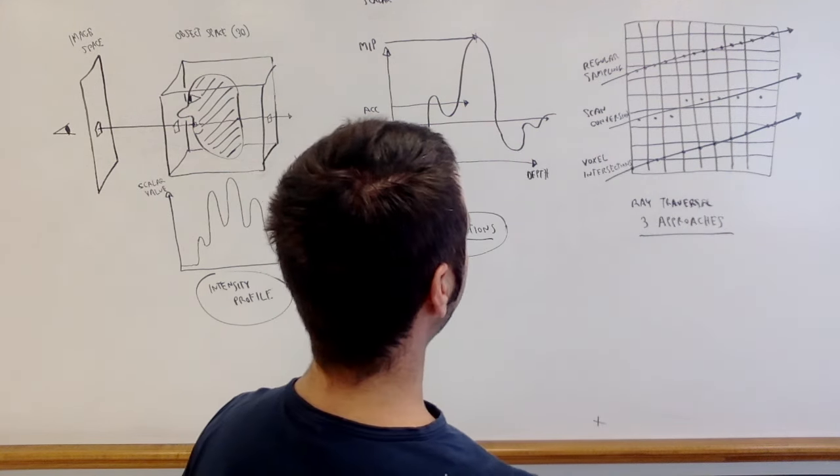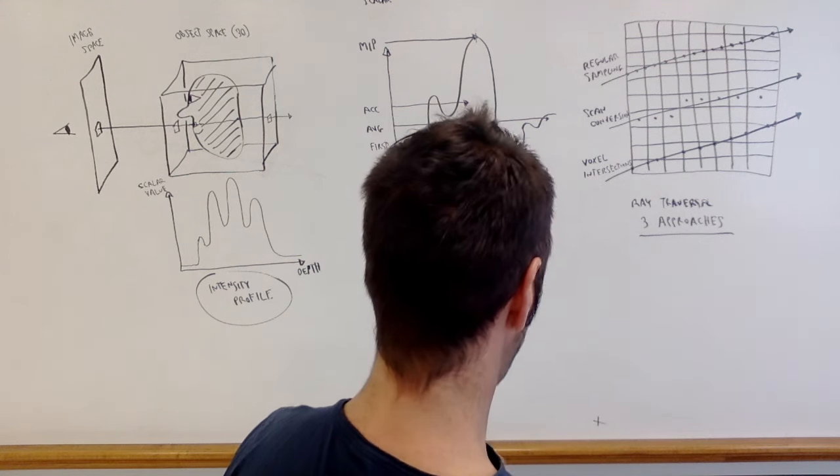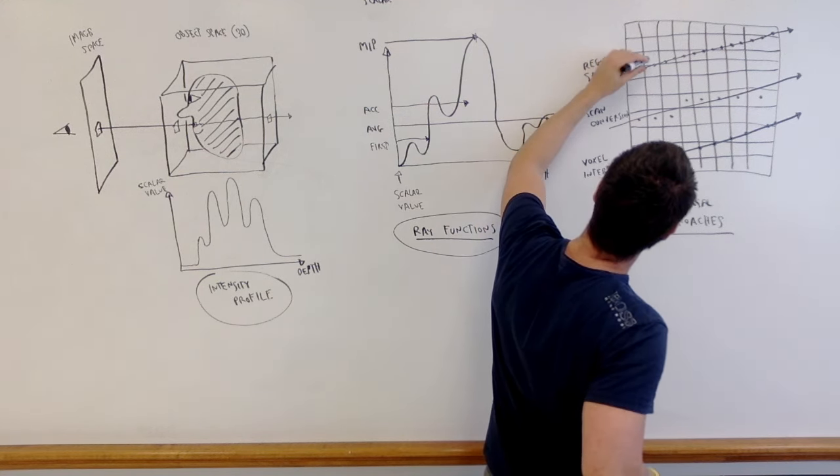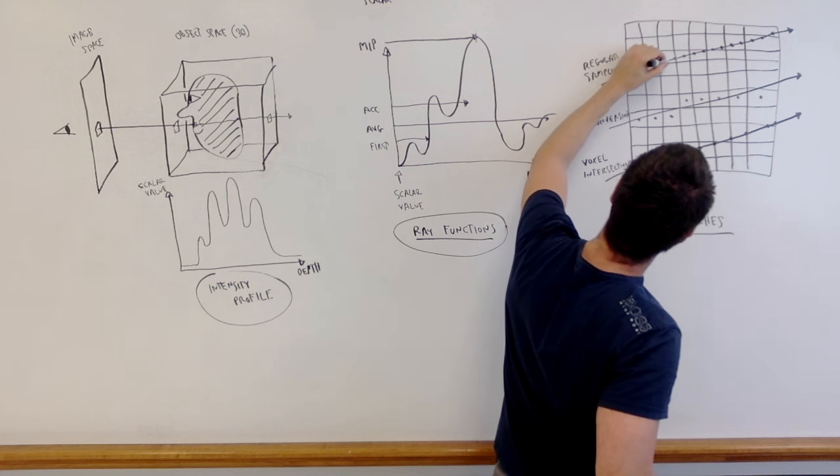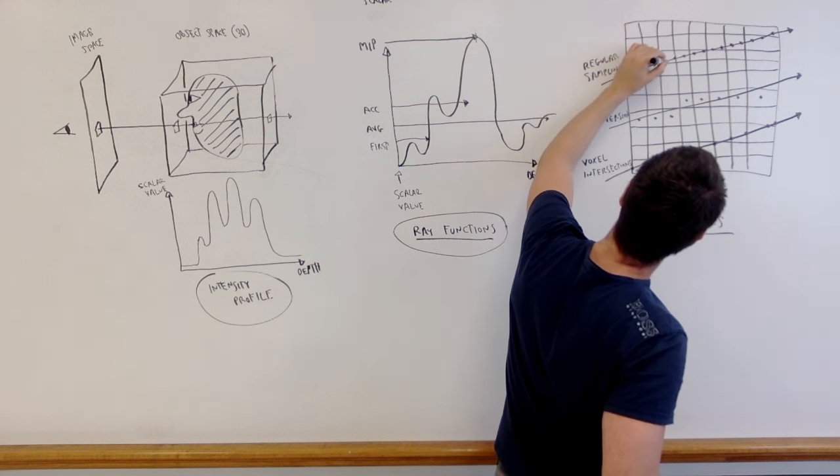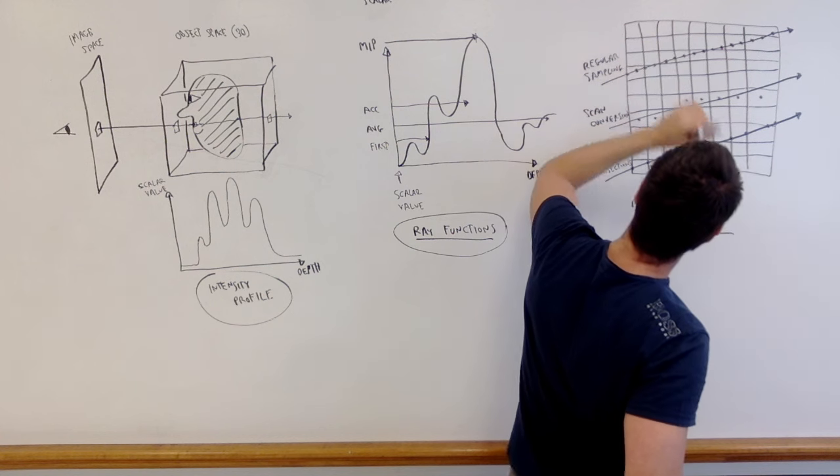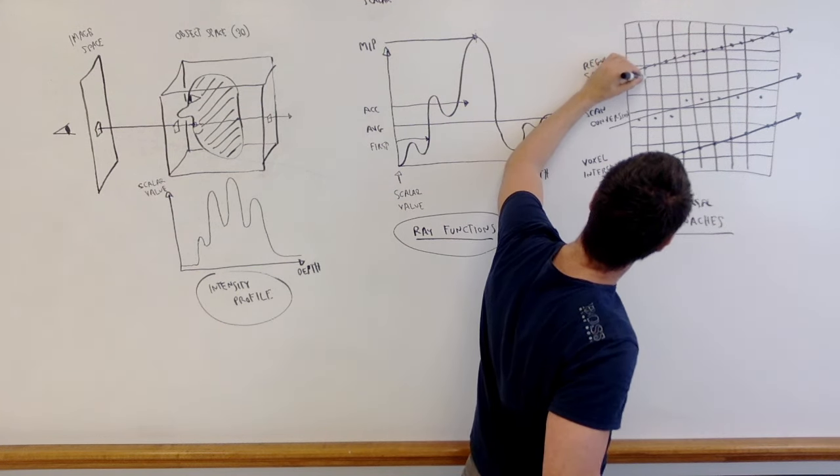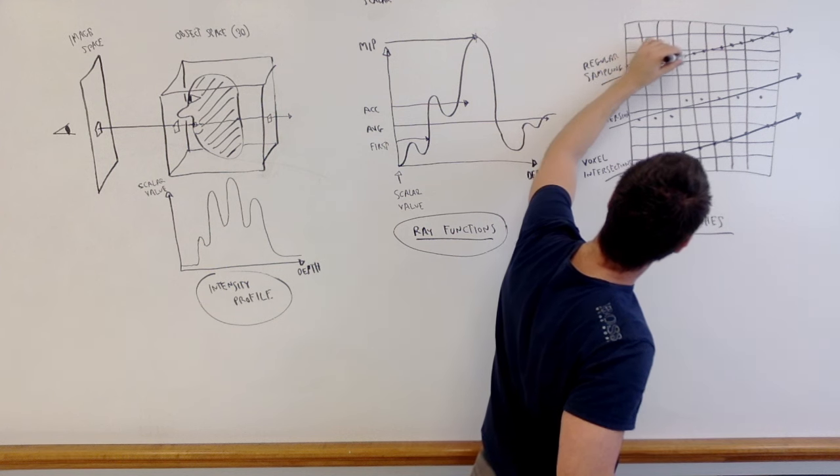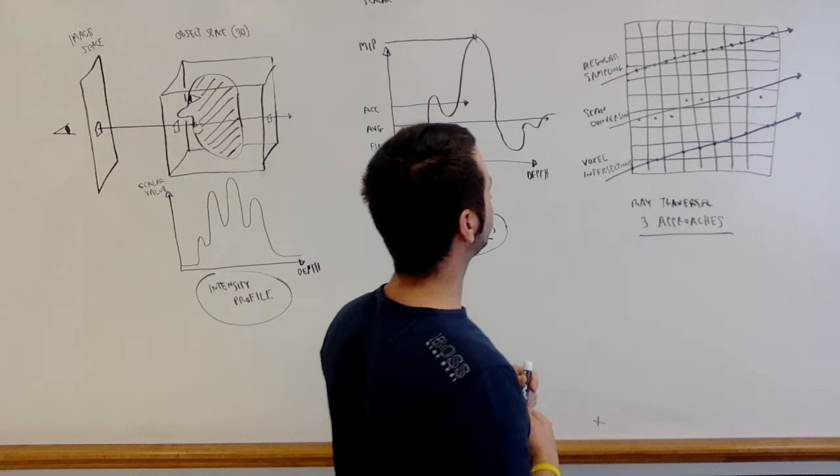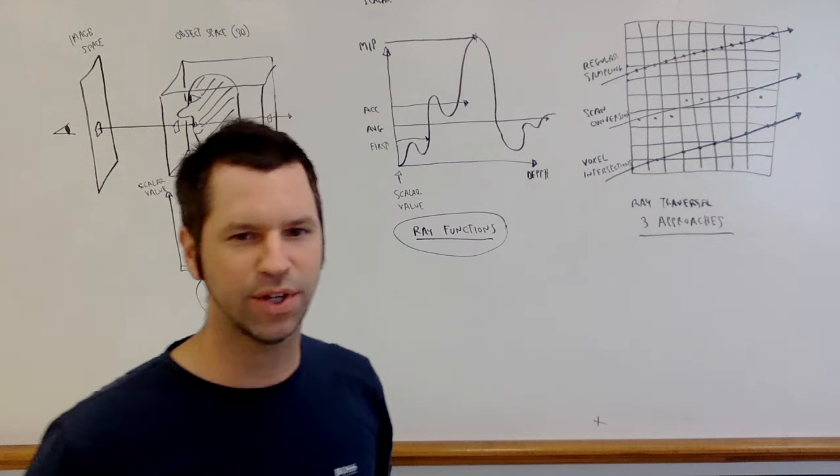Of the three techniques here, this is the most computationally expensive because the samples usually don't fall on the edges of the voxels. So when a sample falls in the middle of a voxel or somewhere not on the edge, in order to get the sample value, we have to interpolate the four values at the cell. So this requires more interpolation, the regular sampling, than the other techniques. So it's a naive approach to sampling. However, it's the most computationally expensive of the three.